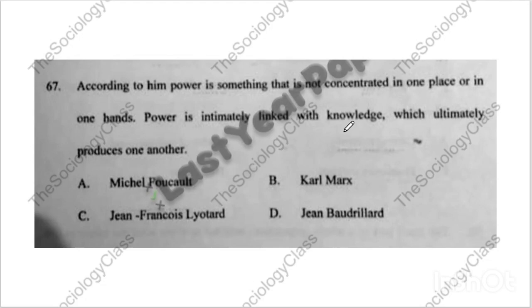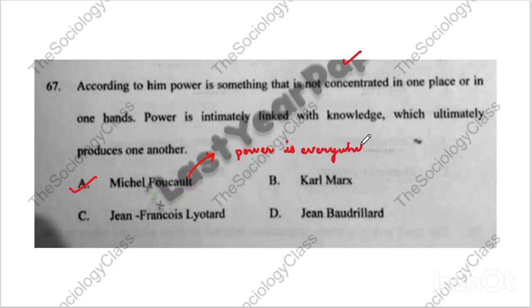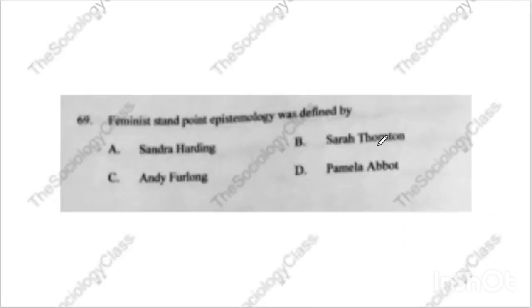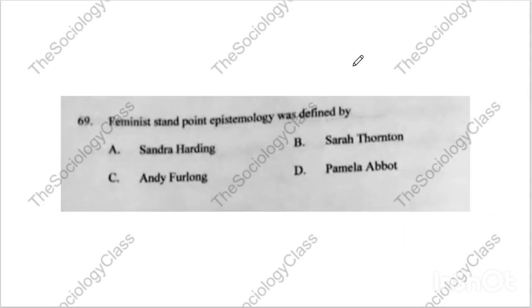Question sixty-seven: 'According to him, power is something that is not concentrated in one place or in one hand.' This is a very famous quote of Michel Foucault. Question sixty-eight asks about feminist epistemology — the correct answer is A — Sandra Harding. I will make a five-minute video on this.